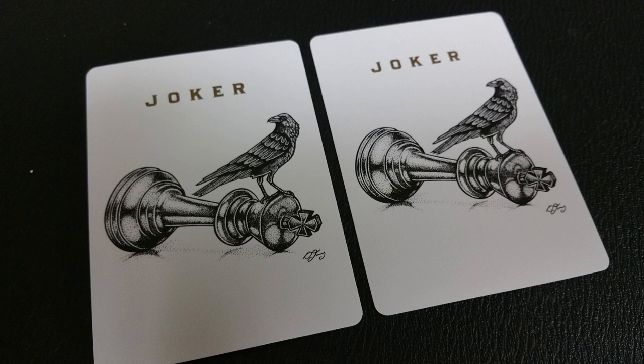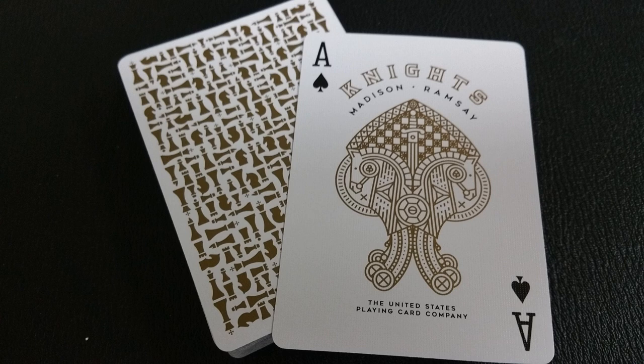With this deck, you'll also get two original jokers. You have the crow symbol, which of course is famous for being on Daniel Madison decks, and then it's sitting on top of a laid-down king chess piece. Your ace of spades is very big, very bold, very beautiful. It does say Knights across the top, Madison, Ramsay, and then the United States Playing Card Company underneath.